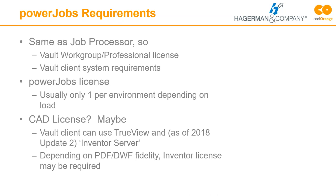Vault Basic does not have the concept of a job queue or job processor, so you must have Vault Workgroup or Vault Professional to use Power Jobs, and you'll need a Power Jobs license as well. In most environments you probably only need one license, maybe two — it really depends on the workload on the processor. You may or may not need a CAD license. What I'll be showing today does involve a little consumable file generation, which can be done with Inventor Server as of the 2018.2 release of Vault, or TrueView for drawings.